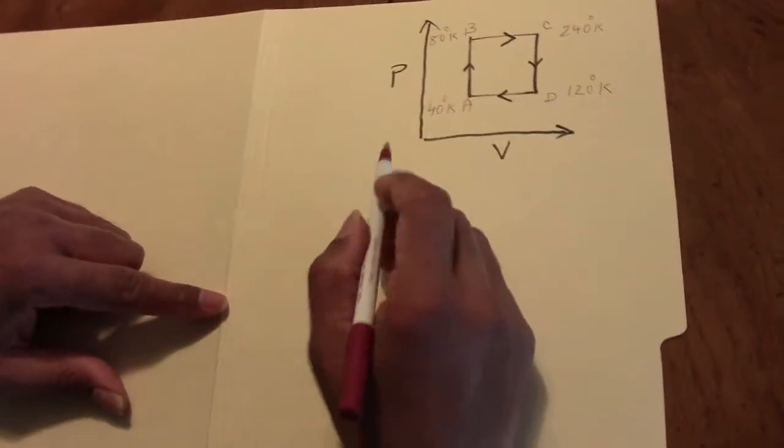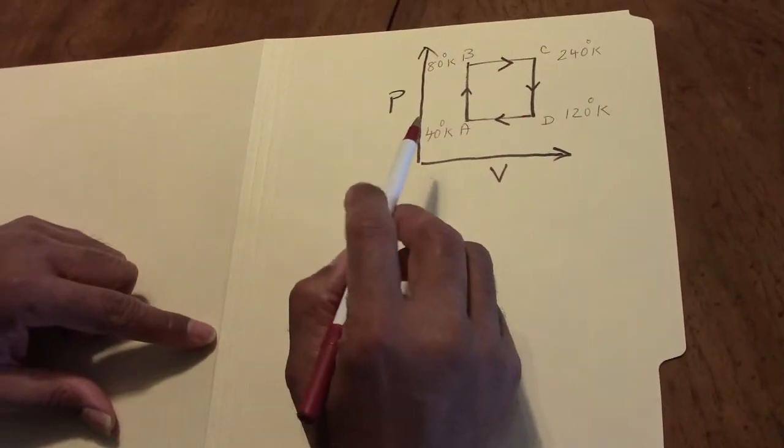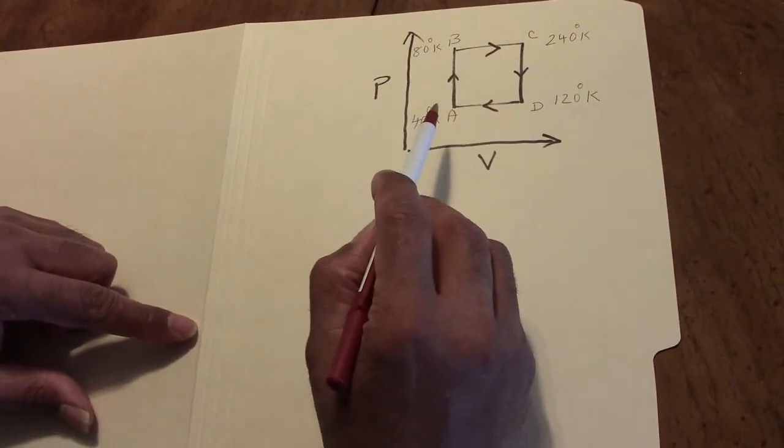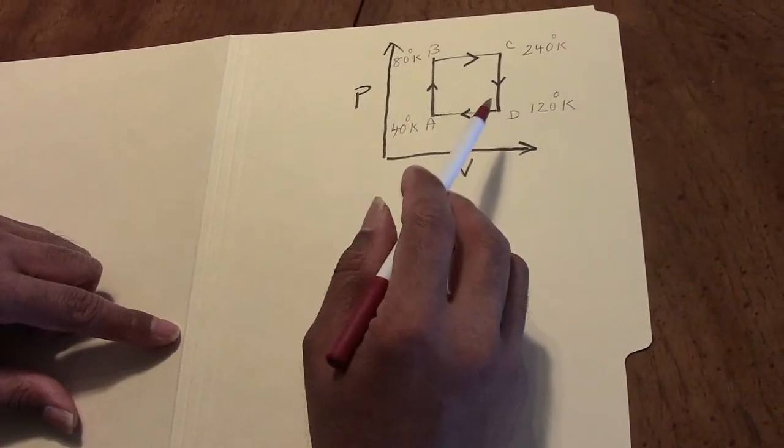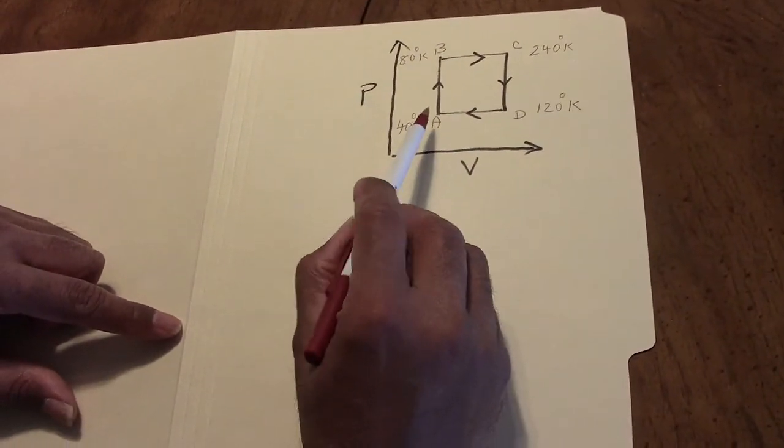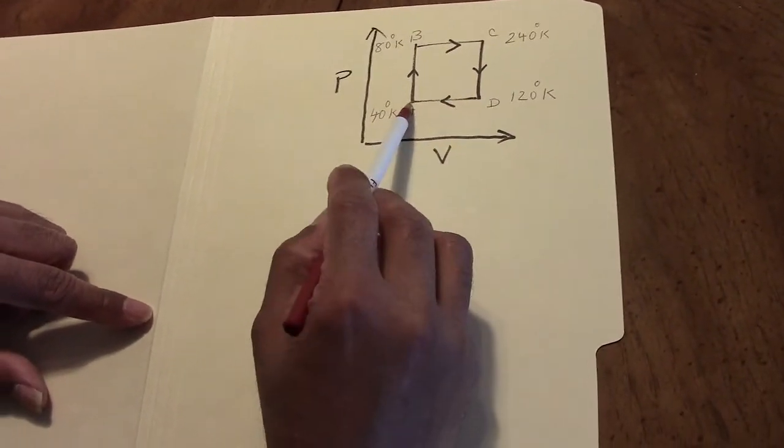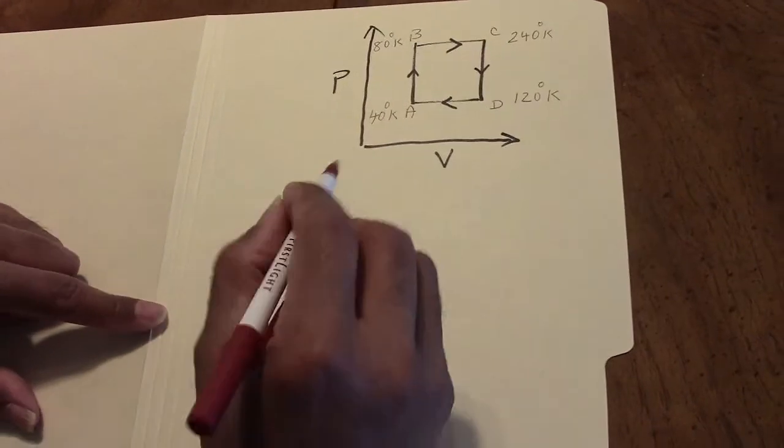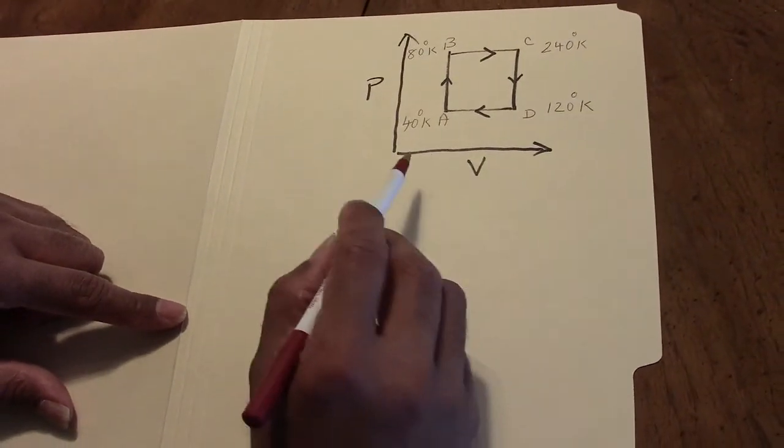This is a problem in thermodynamics. We have an ideal gas that is completing an entire cycle along the path A to B, B to C, C to D and back to A. We are required to find out the amount of work that is done by the gas.